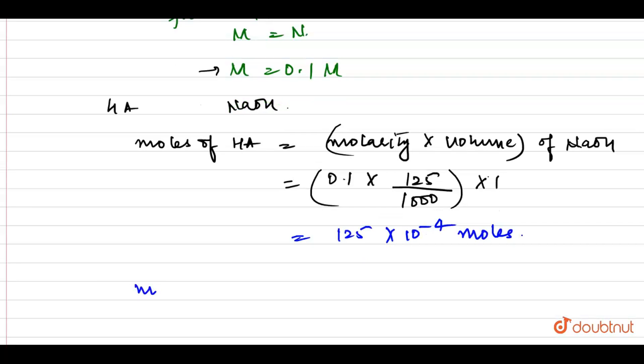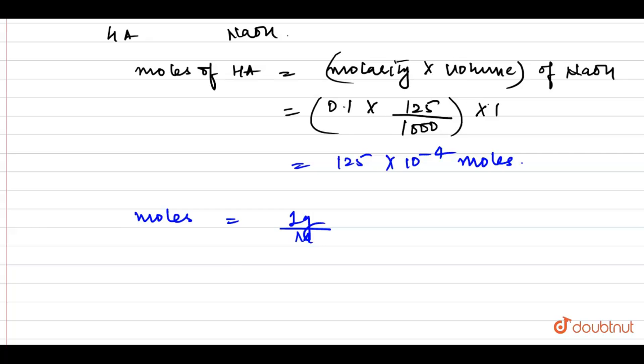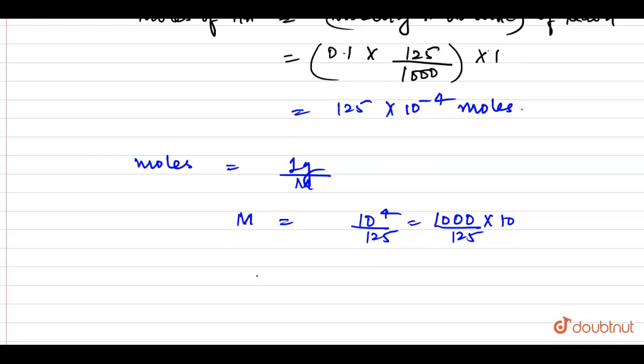Moles is equal to given weight over molar mass. Molar mass will be 1 divided by 125 into 10 to the power minus 4, which makes M equal to 80 grams per mole.